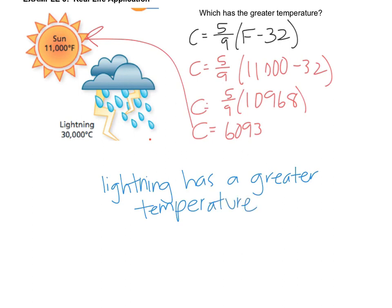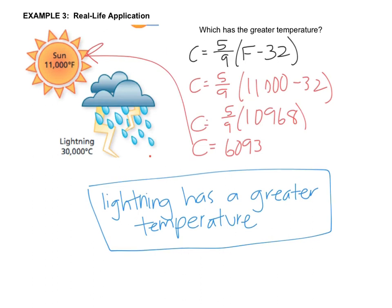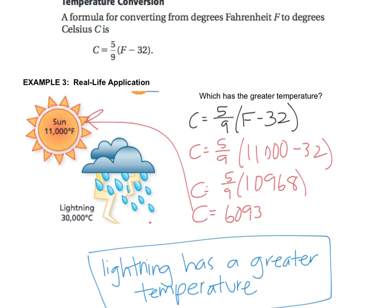Now, you could have plugged in the 30,000 into the formula and found out what that is in Fahrenheit. It's going to be a little more complicated because you'd have to do inverses, whereas here I'm just doing order of operations. But either way, the lightning should end up being a greater temperature. If you have any questions, write them down and ask me when you come to class.